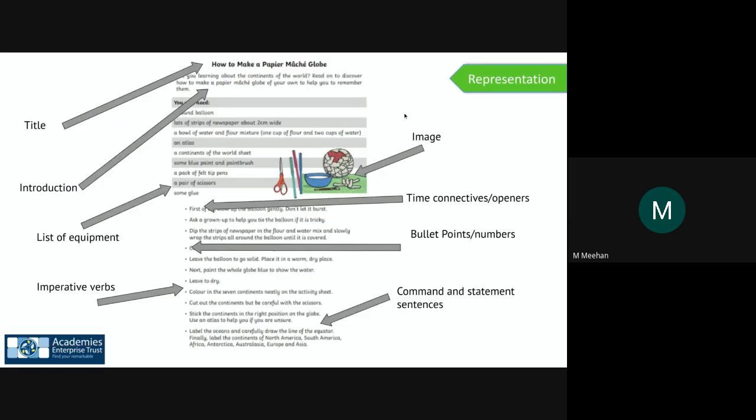Did you spot the title? Did you find the very short introduction? Did you identify the key feature of the list of equipment and the image? Did you find the imperative verbs? There are a few. You only had to underline one if you underlined all of them. That's amazing. Well done.